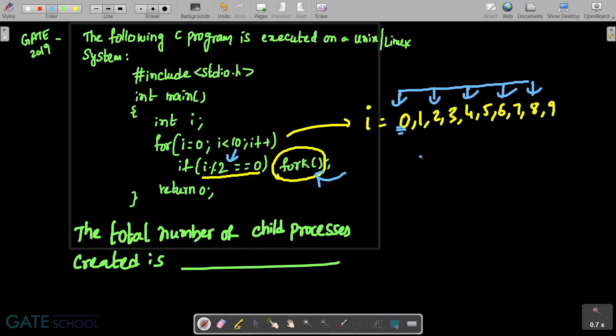The very first time when it is calling, there will be originally only one process, but it will become two processes after calling fork system call as a parent process is going to create a child process. So the number of calls are five.